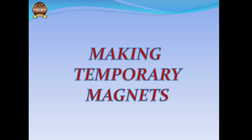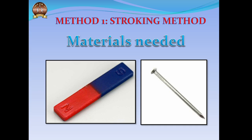Now, how can we make temporary magnets? We can prepare magnets on our own at home. The first method is the stroking method. The materials required are a regular bar magnet — with its north and south poles marked — and an iron nail, needle, or any other magnetic material made of iron, steel, nickel, or cobalt. The red color always indicates the north pole of the magnet.